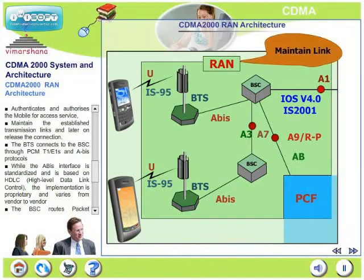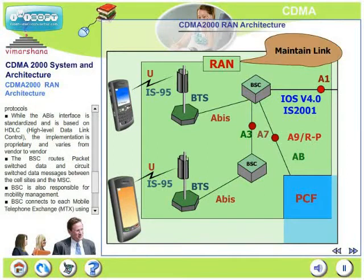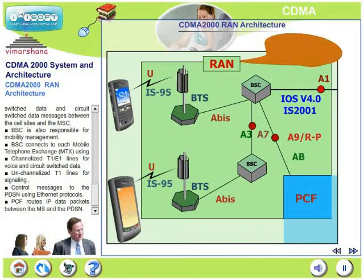BTS connects to BSC through PCM, T1, E1 and ABIS protocols. While the ABIS interface is standardized and is based on HDLC, that is high-level data link control, the implementation is proprietary and may vary from vendor to vendor. BSC routes packet data and circuit data between the cell sites and the MSC.